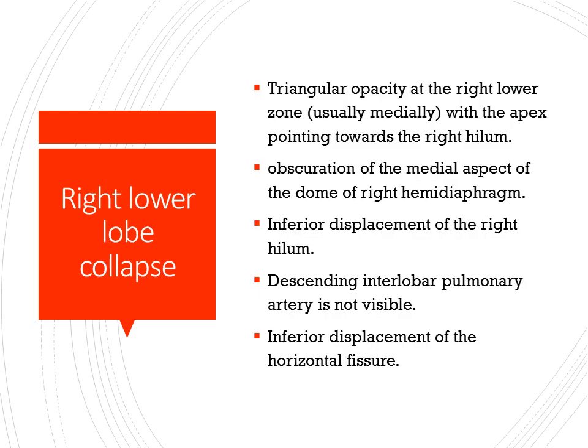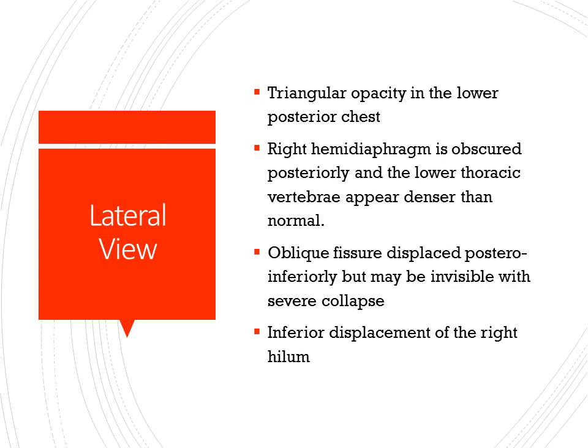Right lower lobe collapse shows a triangular opacity in the right lower zone with the apex pointing towards the right hilum, obscuration of the medial aspect of the dome of the right hemidiaphragm, inferior displacement of the right hilum, descending interlobar pulmonary artery not visible, and inferior displacement of the horizontal fissure. In the lateral view there is a triangular opacity in the lower posterior part of the chest, the right hemidiaphragm is obscured posteriorly, the lower thoracic vertebrae appear denser than normal, and the oblique fissure is displaced posteriorly and inferiorly.